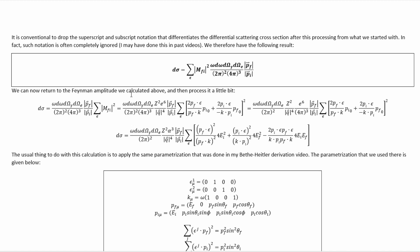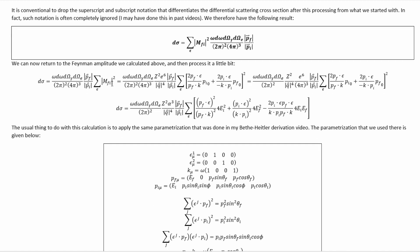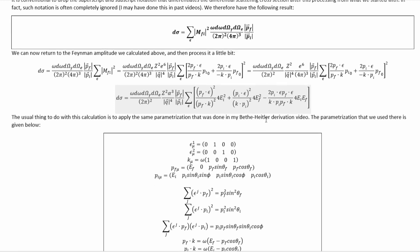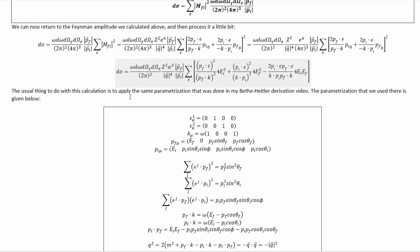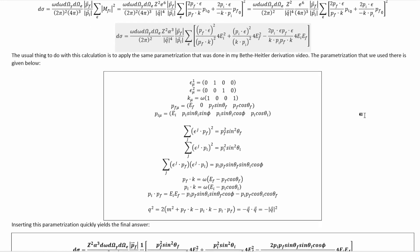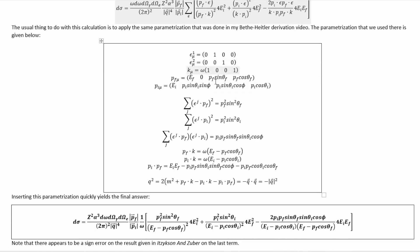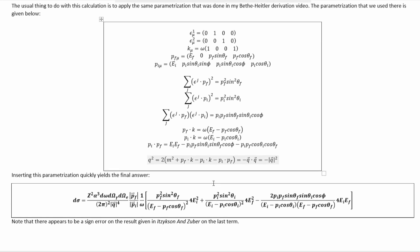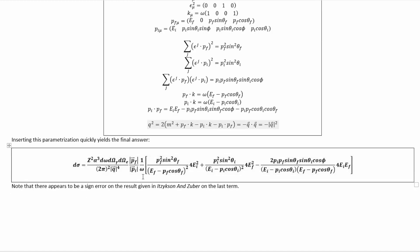We can now return to the Feynman amplitude we calculated above, and then process it a little bit. Inserting it in here gets us to this. The first bit of processing that I did was bring this factor over here so that we can get that alpha cubed in there, and then of course I also did the square. The usual thing to do with this calculation is to apply the same parameterization that was done in my beta-Heitler formula derivation video. So the standard beta-Heitler formula parameterization, which is this right here, and then this parameterization gives us these values for the relevant dot products. Inserting all of that gets us to the final answer here.